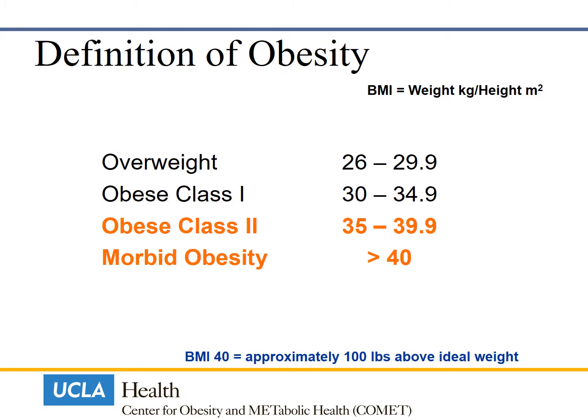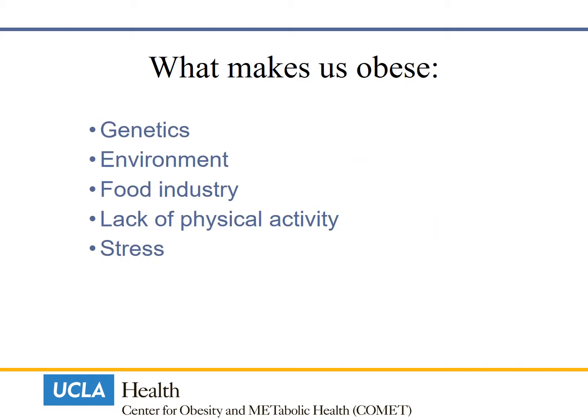Obesity is defined by body mass index. Class 2 obesity is a BMI between 35 to 39.9 and morbid obesity is a BMI greater than 40. Genetics, environment, food industry, lack of physical activity and stress cause obesity.